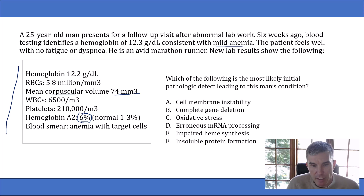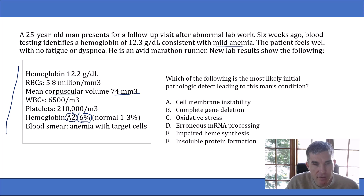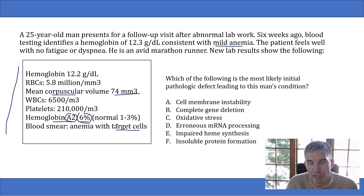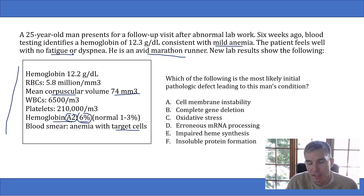In beta thalassemia, patients underproduce beta globin chains, but they can produce alpha and delta chains normally. Hemoglobin A2 is made up entirely of alpha and delta chains, so the amount of A2 goes up in beta thalassemia. This is an important fact you need to know for your Step 1 exam. They also tell you that his blood smear shows target cells, which are another classic finding of beta thalassemia. It's obviously a minor form — he's an avid marathon runner and he's not sick, so he can't have one of the severe transfusion-dependent forms.